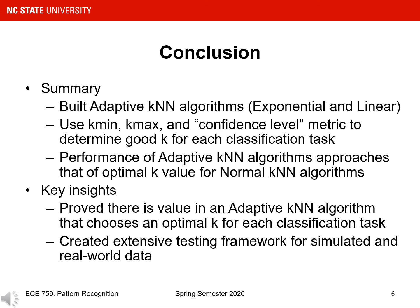I will now conclude my experiment and findings for my adaptive KNN algorithm. Here is a summary of what I did: I implemented two adaptive KNN algorithms in MATLAB, one using an exponential confidence-level metric and one using a linear confidence-level metric. These algorithms use k-min, k-max, and the specified confidence-level metric to determine a good k for each nearest neighbor's classification task. Through experimentation on simulated and real-world data, I discovered that the performance of my adaptive KNN algorithms consistently approaches that of the optimal k-value for the normal KNN algorithms. I proved that there is value behind an adaptive KNN algorithm that chooses an optimal k for each classification task, and I was able to create an extensive testing framework to test my algorithms on both simulated and real-world data. Thank you!